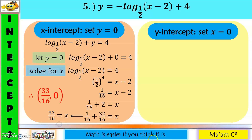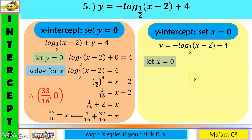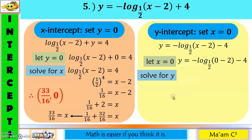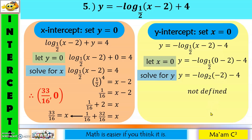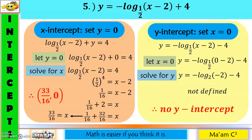For the y-intercept of the fifth example, set x equal to zero. Zero minus 2 is negative 2. Since the argument must be greater than zero and this is a negative number, the logarithm is not defined. Therefore, we do not have a y-intercept, meaning the graph will not pass through the y-axis.